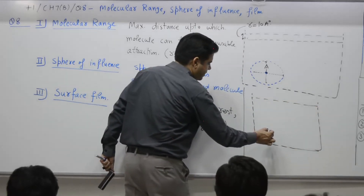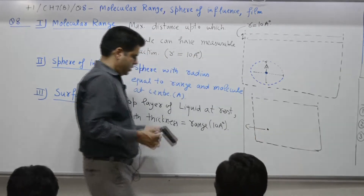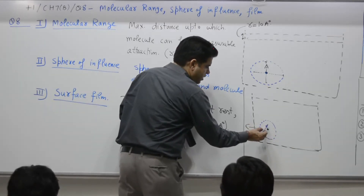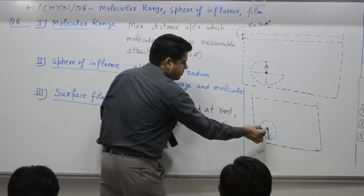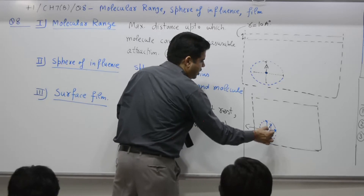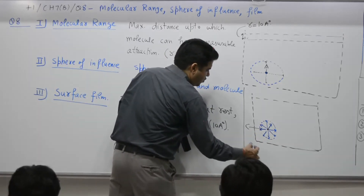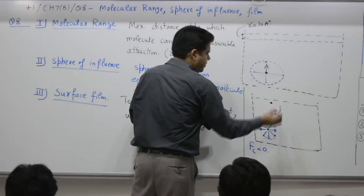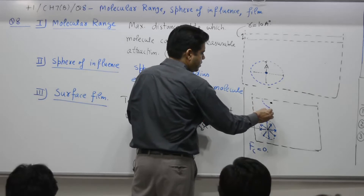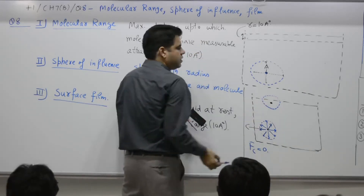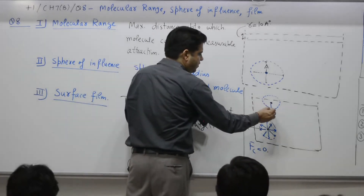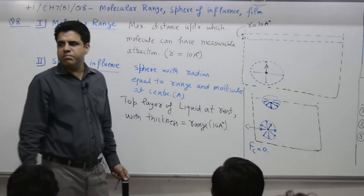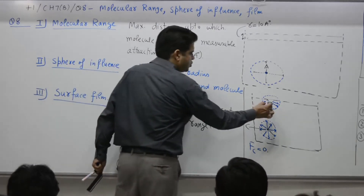If you take into account atom C, it is attracted by surrounding atoms. Atoms below attract it downwards, atoms above attract it upwards, and atoms to the right and left attract it in all directions. So the resultant force at C is zero. Now consider atom B — you draw its sphere of influence, and in this case the downward forces are more, because molecules are missing in the upper part. So the net force on B is downwards.